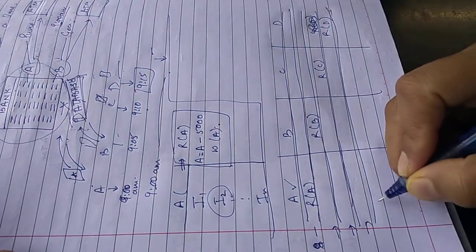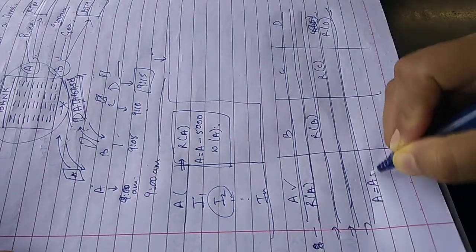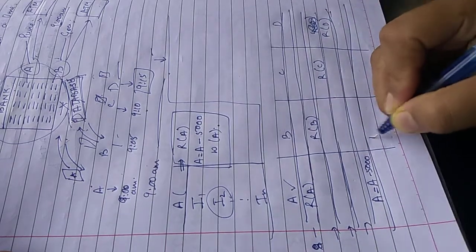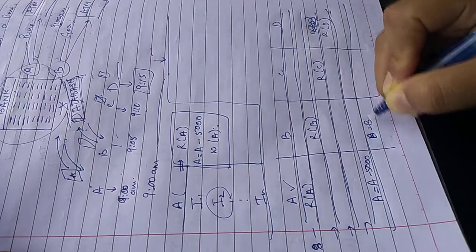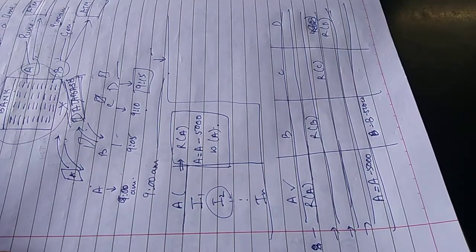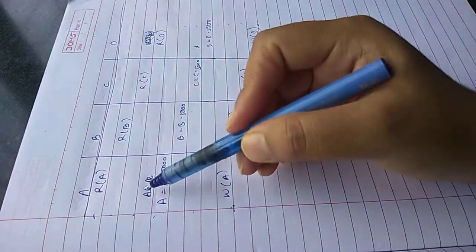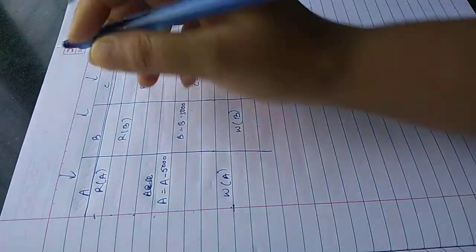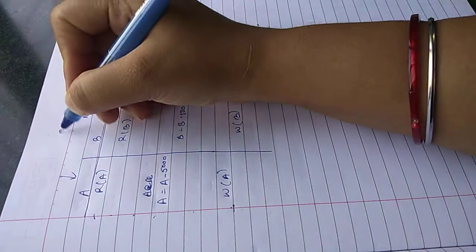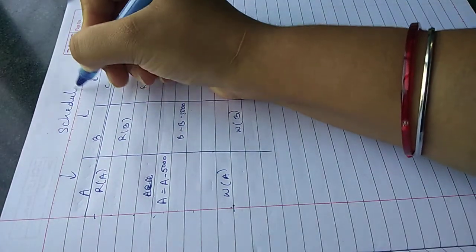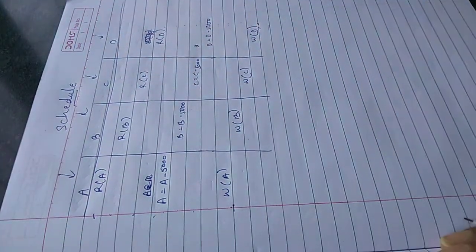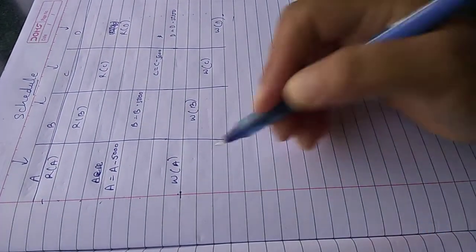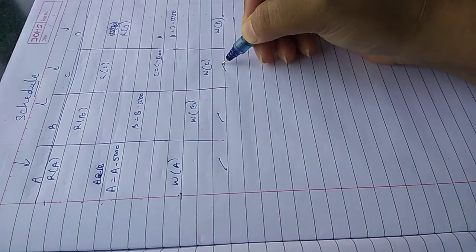I have written here clearly. So what happens is at one time, there are multiple transactions going on and this is known as a schedule and this is known as concurrent executions. Concurrent executions means executing multiple transactions at the same time.